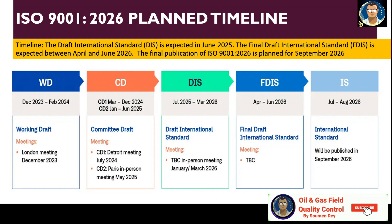The CDT Detroit meeting happened in July 2024, and the CD2 Paris in-person meeting happened in May 2025. Then comes the DIS — Draft International Standard — with a TBC in-person meeting from January to March 2026. The Final Draft International Standard meeting will be held within April to June 2026, and the international standard will be released July to August 2026 and published in September 2026.